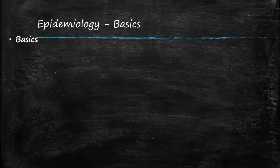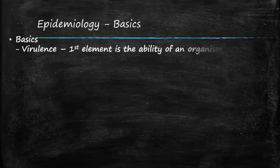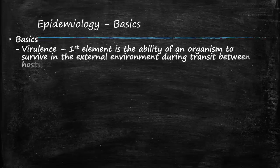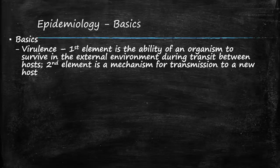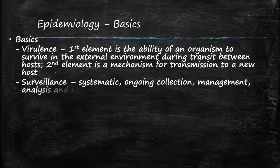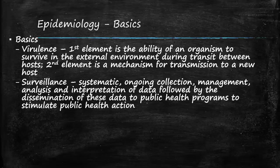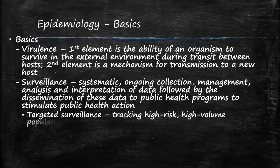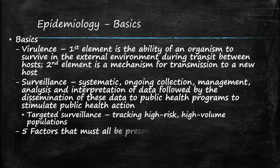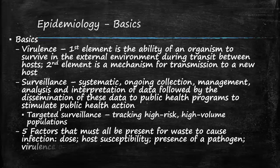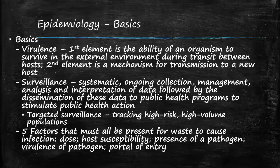We will begin by talking about some basics in epidemiology. First, virulence, which has two elements: the ability of an organism to survive in the external environment during transit between hosts, and a mechanism for transmission to a new host. Targeted surveillance tracks high-risk, high-volume populations like those in acute care settings. Regarding biohazard and waste, there are five factors that must be present for waste to cause infection: dose, host susceptibility, presence of a pathogen, virulence of a pathogen, and a portal of entry — a way to access the body.